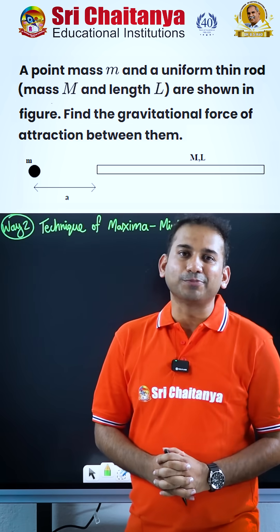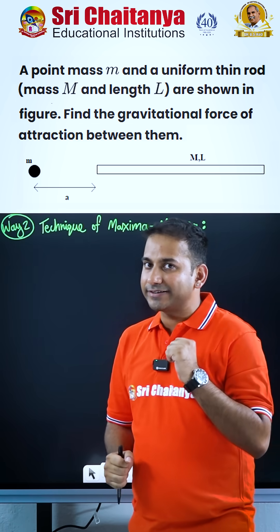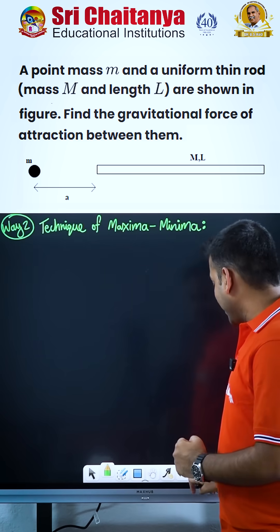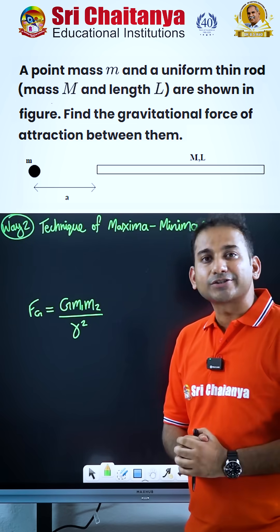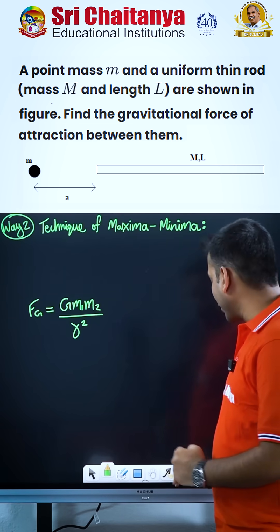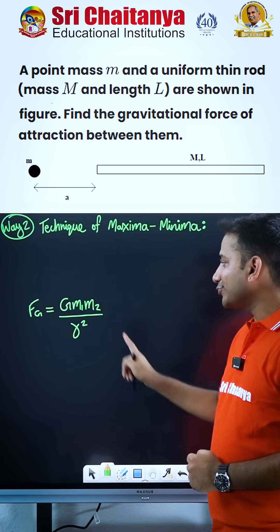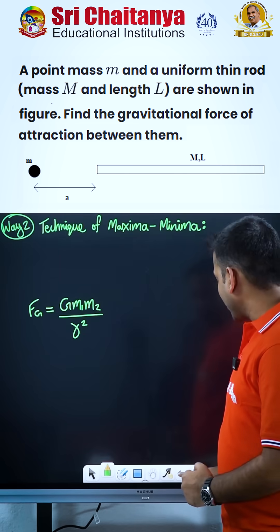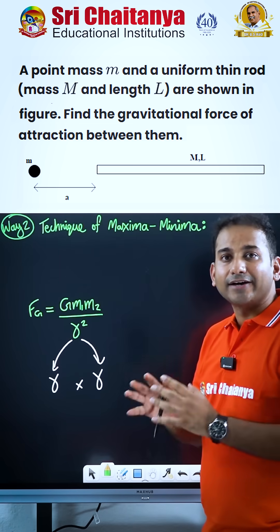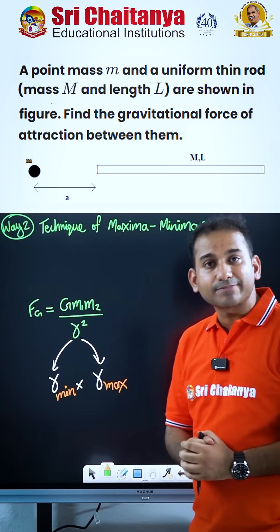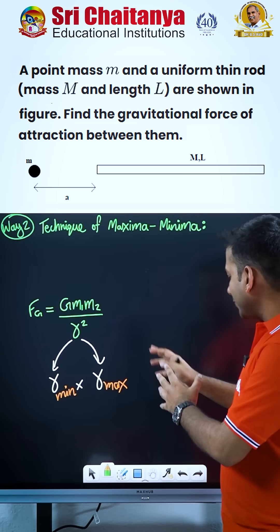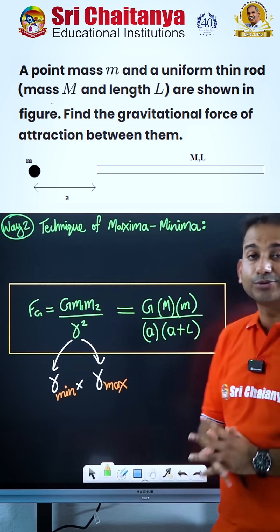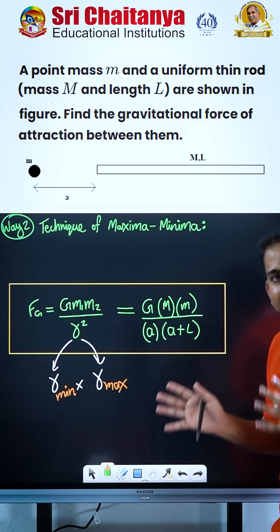But we could have also solved this problem in a much easier way by using the technique of maxima and minima, in which we directly apply Newton's law of gravitation applicable for point masses. The issue is that the distance of separation keeps on changing, which can be substituted as R — one is minimum, one is maximum. The moment you substitute this, the final answer we get is exactly the same.